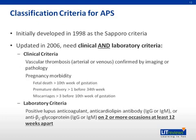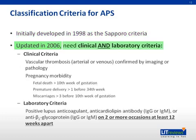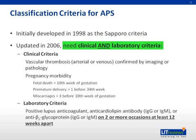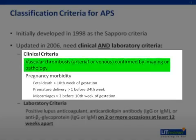Now that we have reviewed the autoantibodies and clinical presentation, we will learn how these are incorporated into the classification criteria for APS. The initial Sapporo criteria, developed in 1998, were updated in 2006. It is a very important point that to diagnose someone with APS, they must meet both clinical and laboratory criteria. For the clinical criteria, a patient must have either a vascular thrombosis or pregnancy morbidity. Vascular thrombosis is defined by one or more clinical episodes of arterial, venous, or small vessel thrombosis in any tissue or organ confirmed by imaging or pathology.